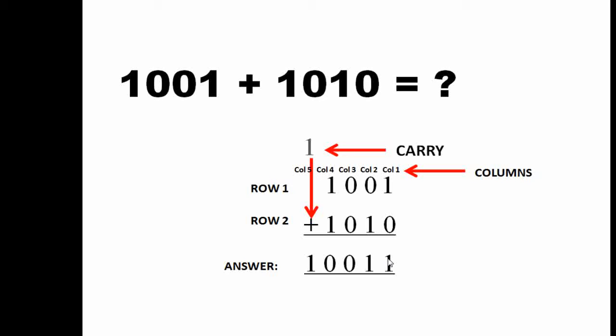So in the answer you will find out the rightmost digit is now 1. Now let us solve column 2.